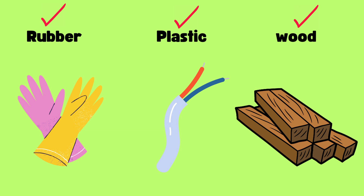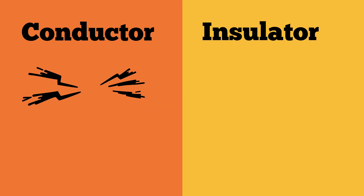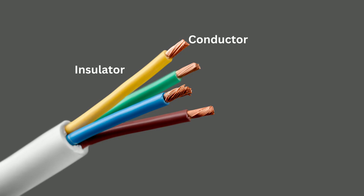Conductors are used to carry electric current, while insulators are used to prevent the flow of electric current. Conductors are typically made of metals, while insulators are typically made of non-metals.